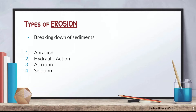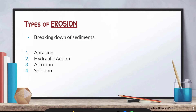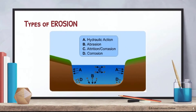Let's jump into erosion. Erosion by definition is very simple — it is the breaking down of sediments. When you erode or weather something, it undergoes a process of degradation and breaking down. There are four main types of erosion processes in a river: abrasion, hydraulic action, attrition, and solution.